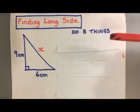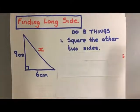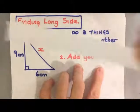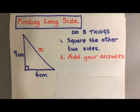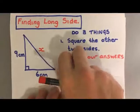You have to do three things. The first thing you have to do is you have to square the other two sides. Okay, so take the other two sides and square them. Once you've done that, you have to add your two answers. Square the two sides, add the answers, and then the last thing you have to do is square root that answer.